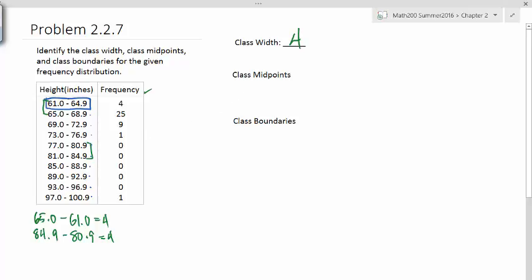And the way to find the class midpoint is if we draw this on the number line, we have 61 to 64.9. And so that number right in the middle is essentially the average between these two.